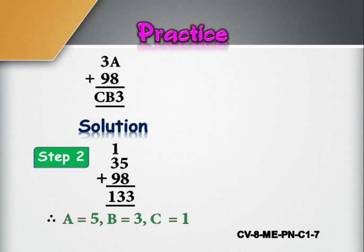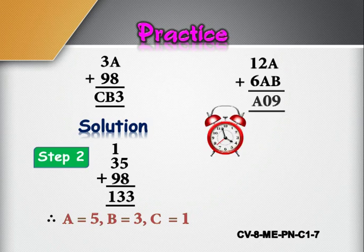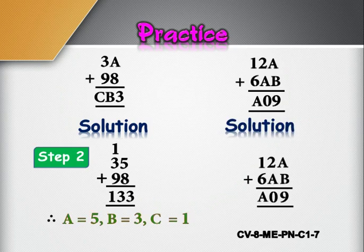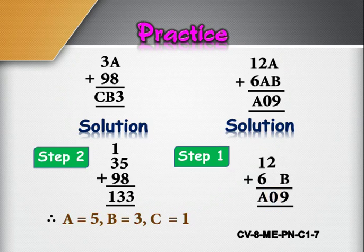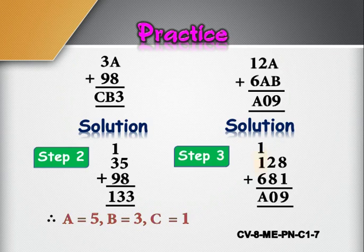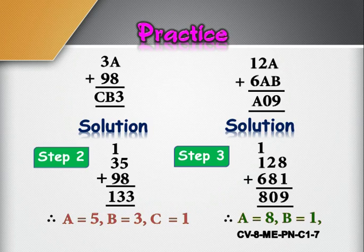Here is one more practice problem: find the value of A and B in 12A plus 6AB equals A09. Step 1: Since A plus B gives 9 in the ones place, and 2 plus A in the tens place gives 0 in the sum, A should be 8 and B should be 1. Step 2: Then 12A plus 6AB becomes 128 plus 681. Step 3: 1 plus 1 plus 6 equals 8 in the hundreds place. Therefore, 128 plus 681 equals 809. Hence A equals 8 and B equals 1.